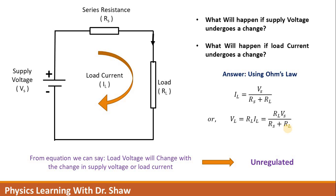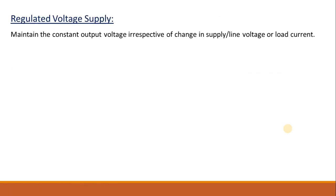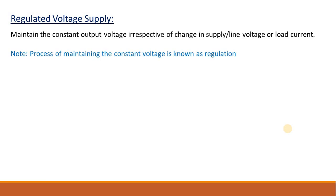From here we can define what is a regulated voltage supply. A regulated voltage supply maintains a constant output voltage irrespective of changes in supply voltage, which we also call line voltage, or load current. This process of maintaining constant voltage is known as regulation.